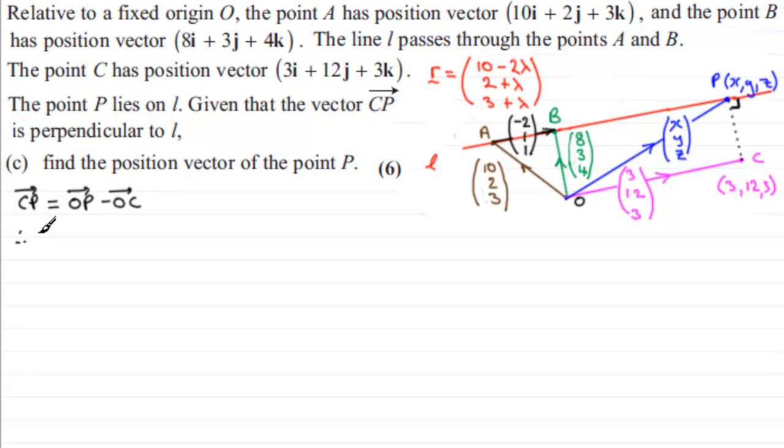And, that vector is perpendicular to the vector C to P. So, I can use the scalar product, or some of you might know it as the dot product. Remember, if you get two vectors which are perpendicular, the dot product will equal 0. And, that will help us form some equations. We also know that the point P lies on the line L, and so it satisfies this equation.